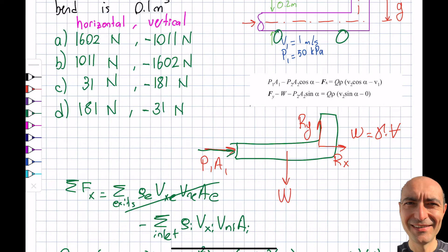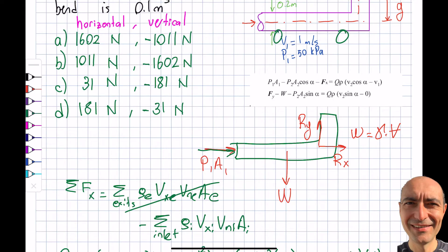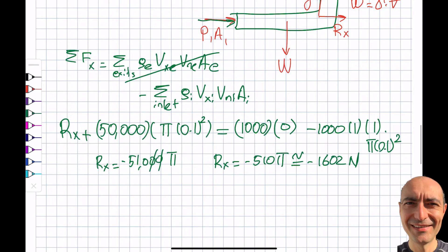So this was kind of simple. I don't even have to do part B, but it's important just for our practice purposes. So I simply go ahead and write ΣFy will be equal to over the exits, ρ exit Vy exit Vn exit A exit minus summation over the inlet, ρ inlet Vy inlet Vn inlet A inlet.